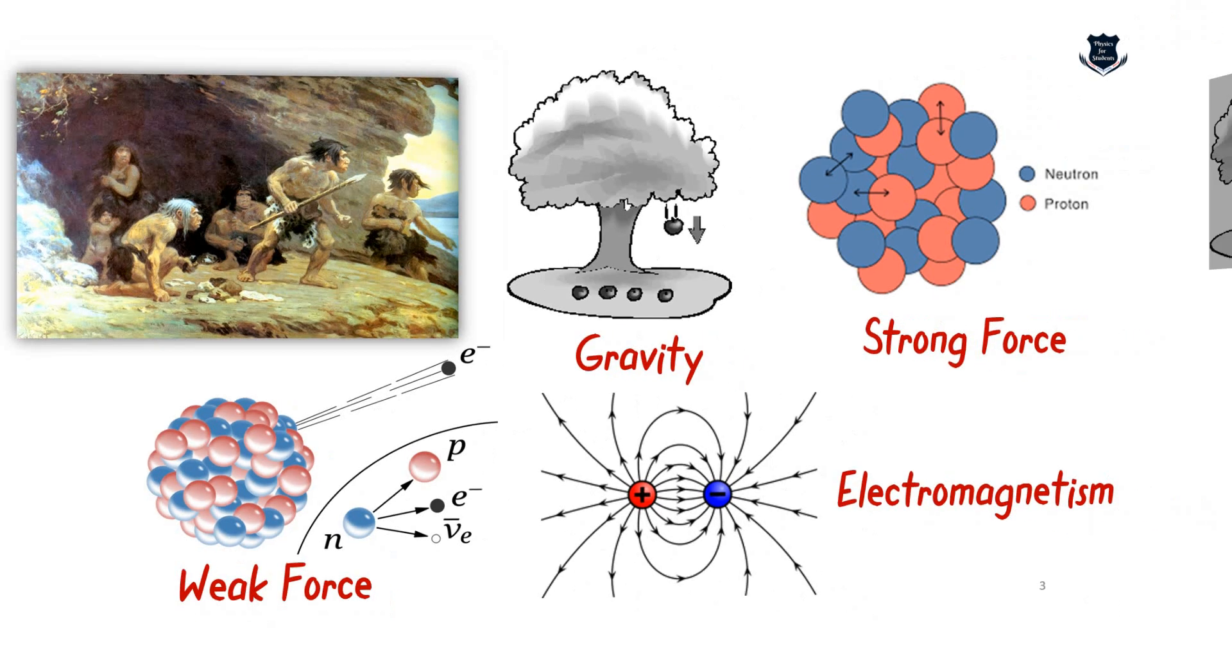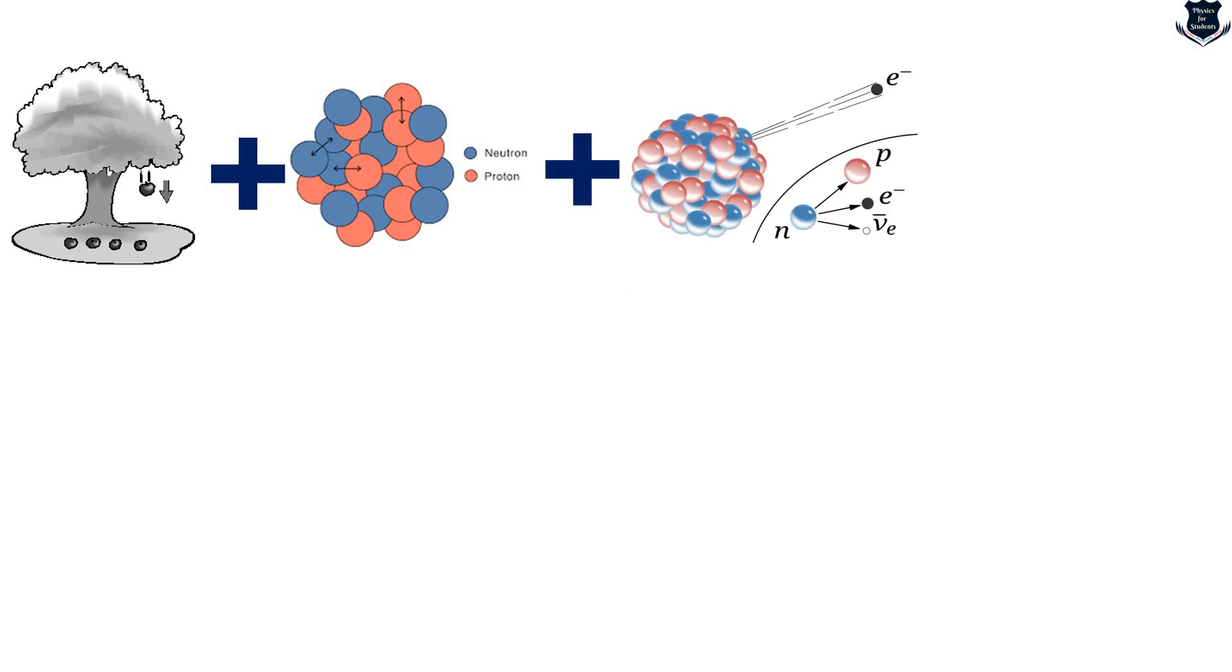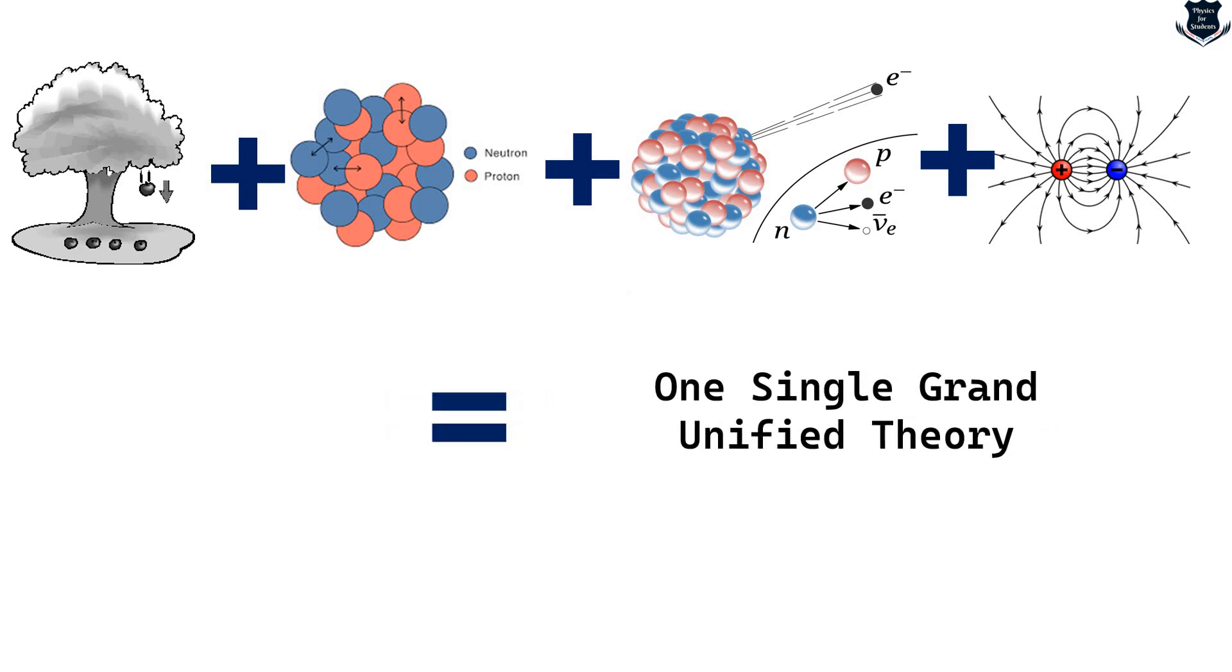Yet after finding these forces, there are certain things which we are failing to unite. Well, gravity plus the weak force and the strong force along with electromagnetism has been aimed to unite into one single grand unified theory.